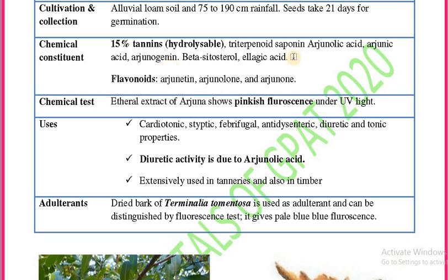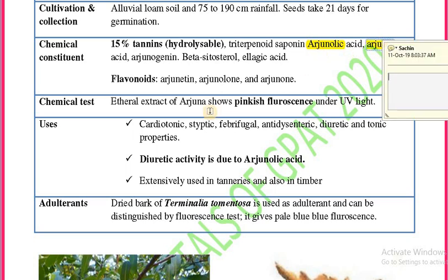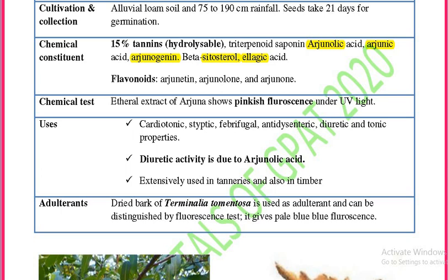Chemical constituents of Arjuna also include triterpenoid saponins: arjunolic acid, arjunic acid, and arjunogenin. Additional constituents are beta-sitosterol and ellagic acid. It also consists of flavonoids: arjunatein, arjunolone, and arjunone. So arjunolic acid, arjunic acid, and arjunogenin are the saponins or triterpenoids.